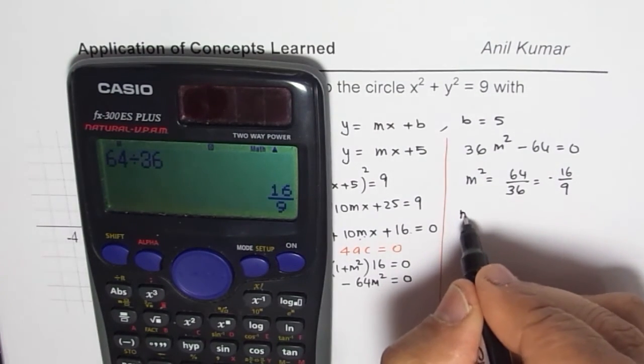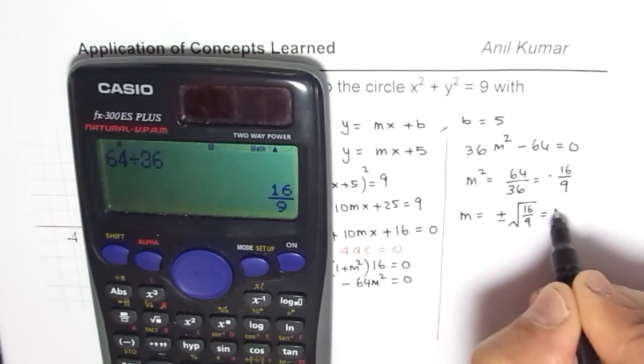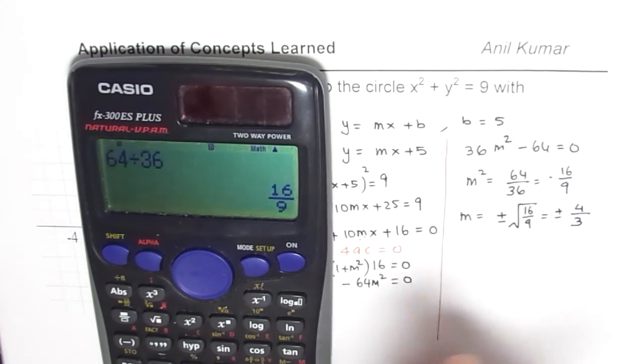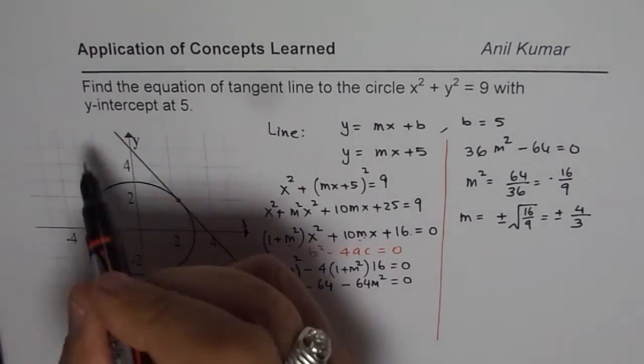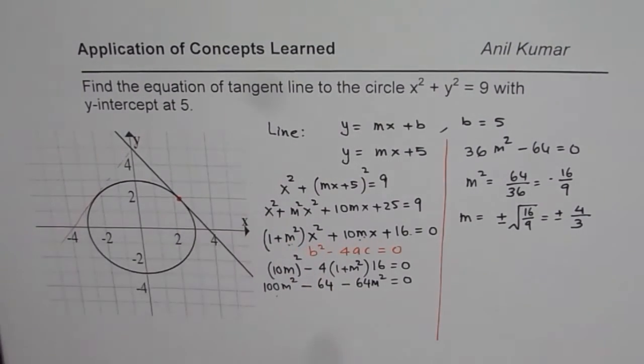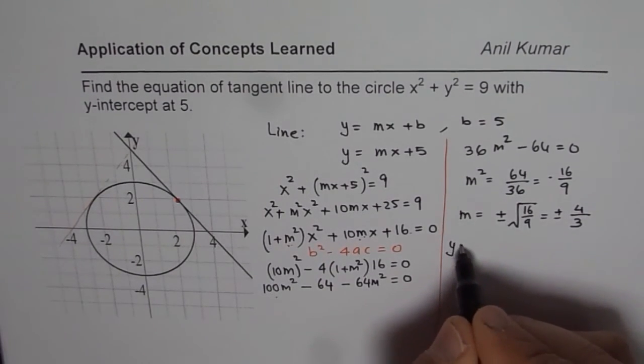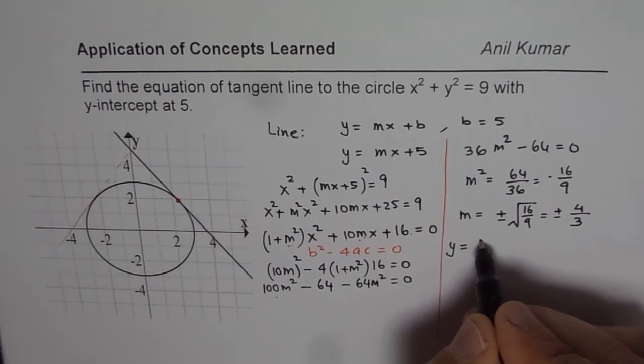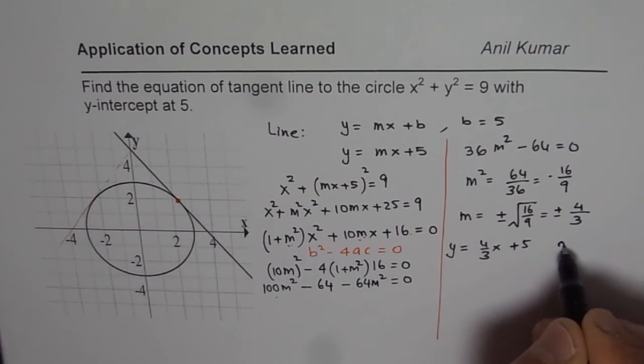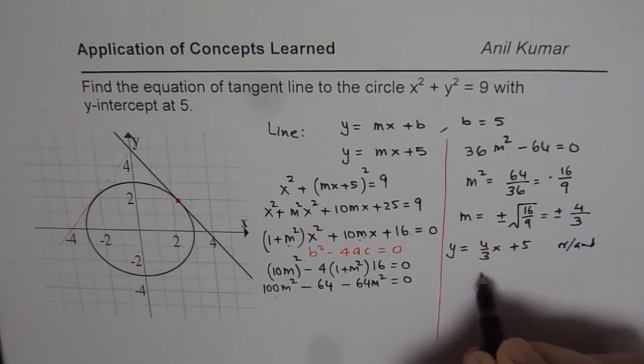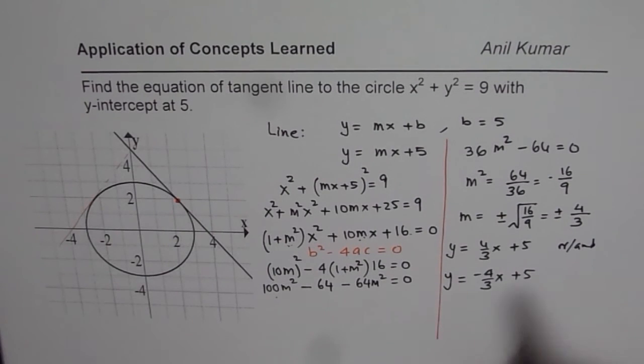And then m will be equals to plus minus square root of 16 over 9, which is plus minus 4 over 3. So, you get two possible values of m as expected. You can see here that from this y-intercept, we could have a line on this direction also. So, there are two possible solutions and that gives us the result. That equation could be y equals to 4 over 3x plus 5, or minus 4 over 3x plus 5. So, there are two possible lines and that is how you do it.